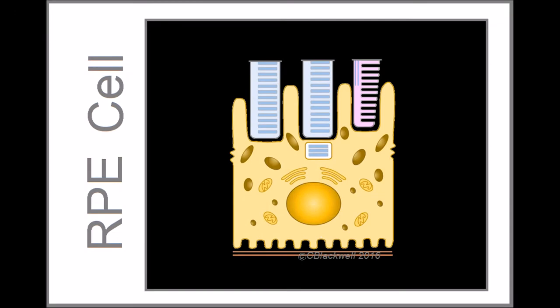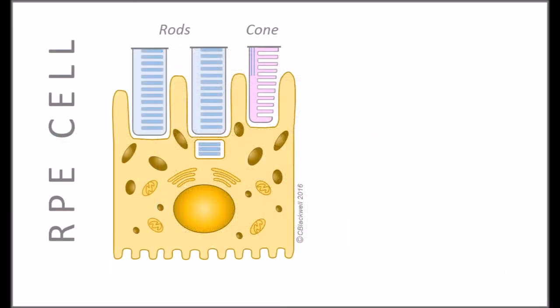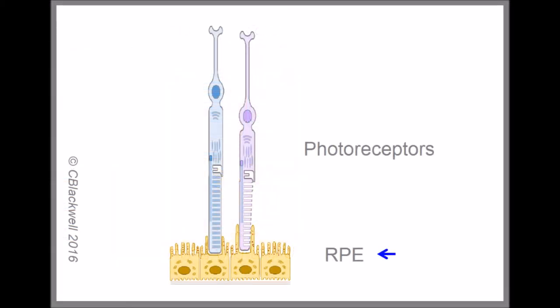Anytime we are talking about photoreceptors, it is important not to overlook the supporting cast, the retinal pigment epithelial cells, RPE for short. You can see the heads of the rods and cones are nestled in the microvilli that extend from the surface of the RPE cells. This diagram is not drawn to scale. In the fovea, each RPE cell is engaged with over 20 photoreceptors.